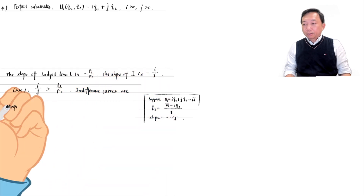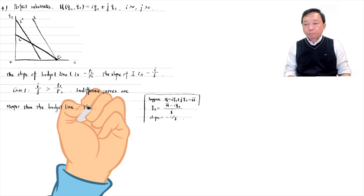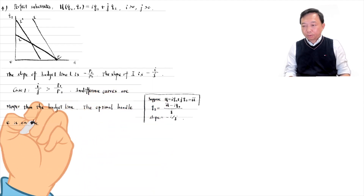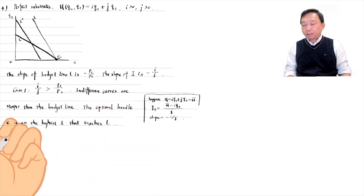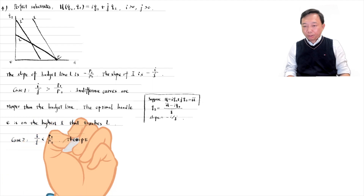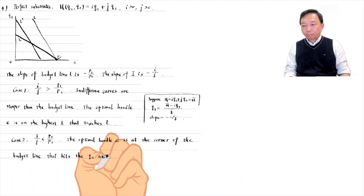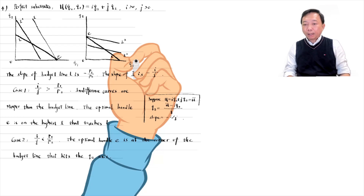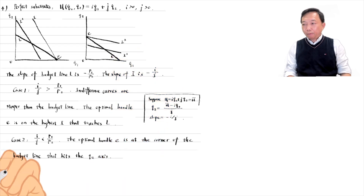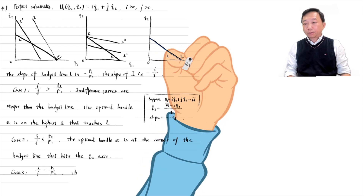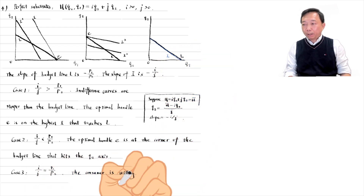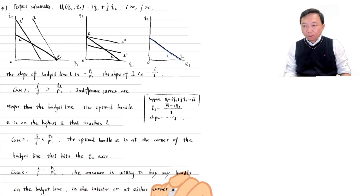If the indifference curves are steeper than the budget line, then the optimal bundle E is at the corner of the budget line that hits the Q1 axis. By the highest indifference curve rule, the optimal bundle is on the highest indifference curve that touches the budget constraint, and the consumer spends her entire income on Q1. By contrast, if the indifference curves are flatter than the budget line, the optimal bundle E is at the corner that hits the Q2 axis, and the consumer spends all her income on Q2. If the slopes are equal, the consumer is willing to buy any bundle on the budget line, in the interior or at either corner.